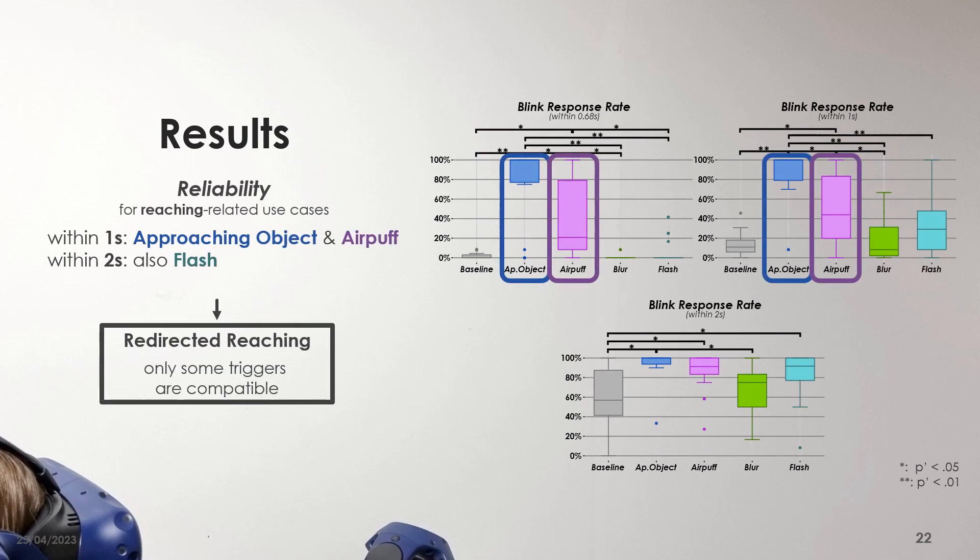Considering the reliability of the triggers, only some of them were found to be reliable for hand redirection. We found that only the approaching object and AirPuff triggers can be recommended when blinks need to be triggered within time windows of only one second.